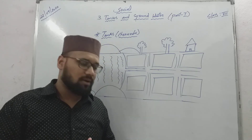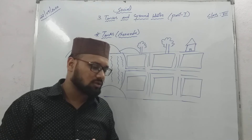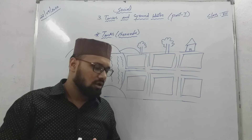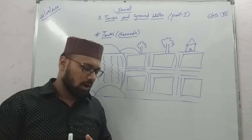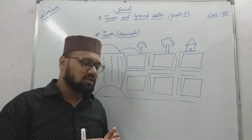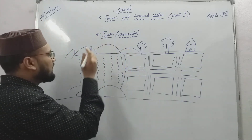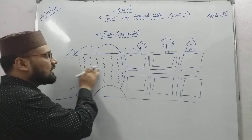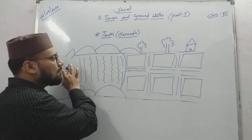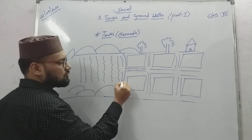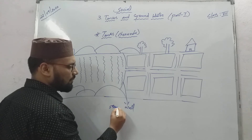How is a tank built? Tanks were usually built by constructing a strong wall of stone and mud across a small stream, such that on one side of the wall, a large body of water would be formed. As you can see in the picture on page 22, figure 3, these strong walls of stone and mud are clearly visible.